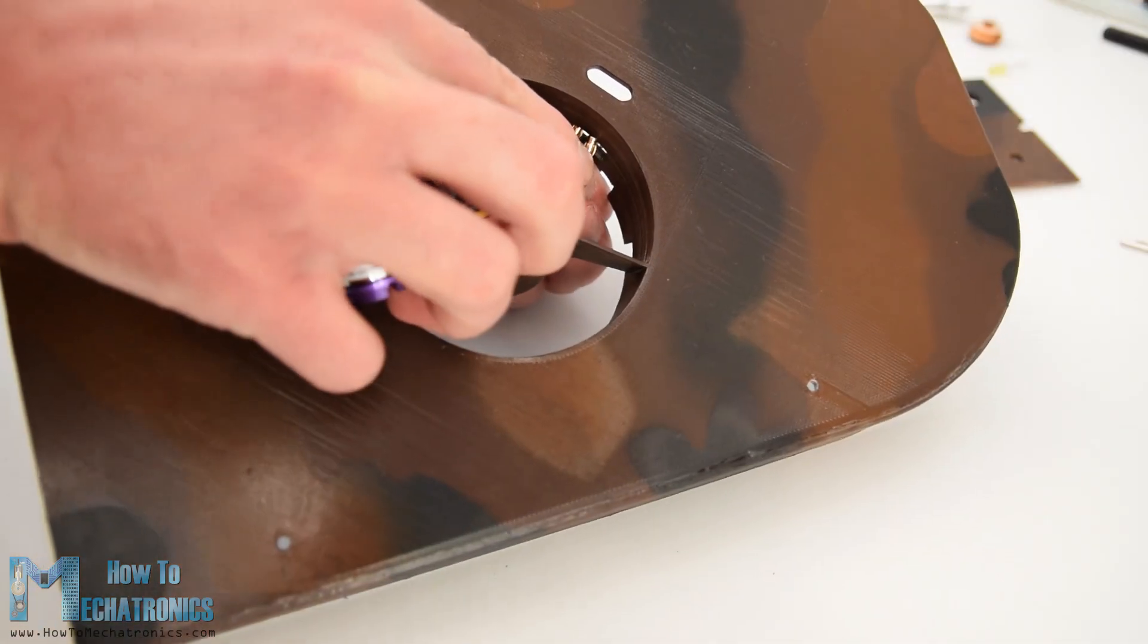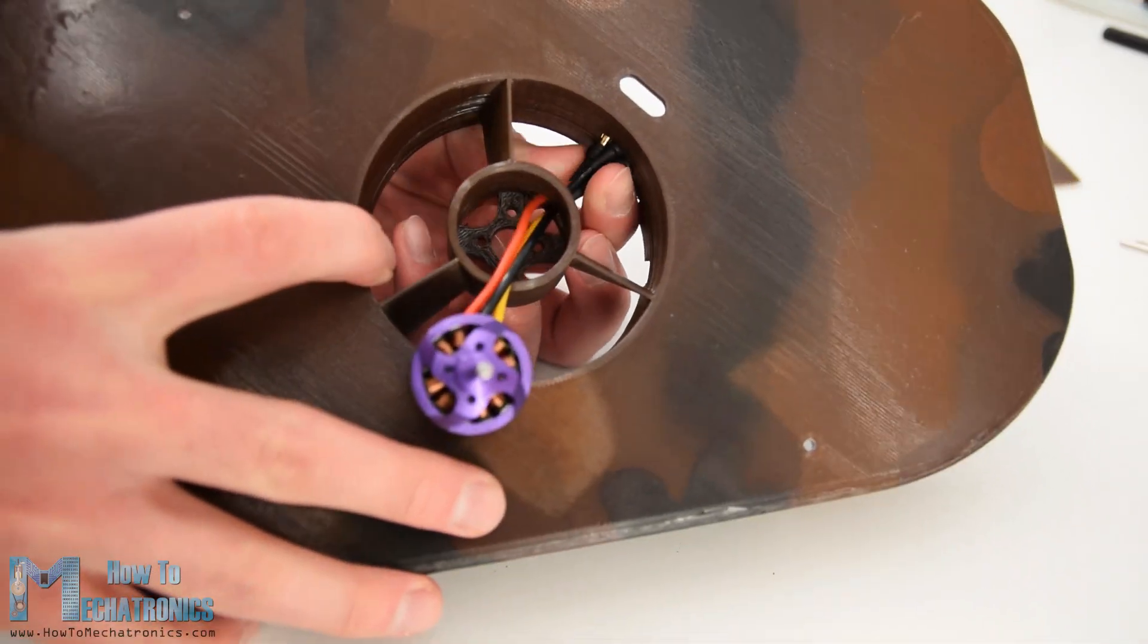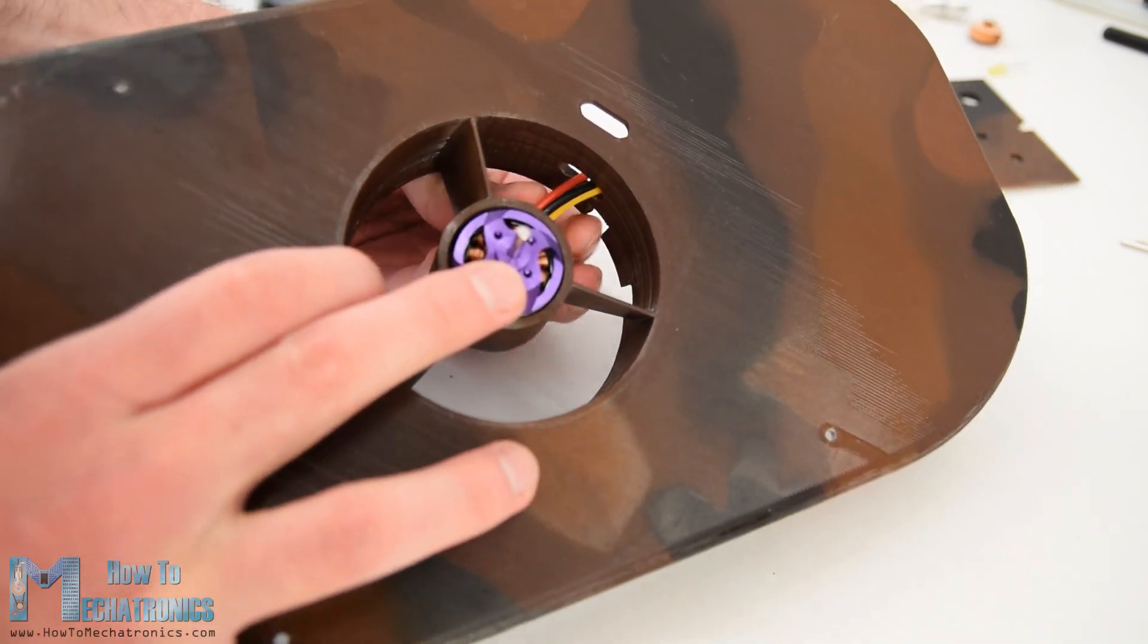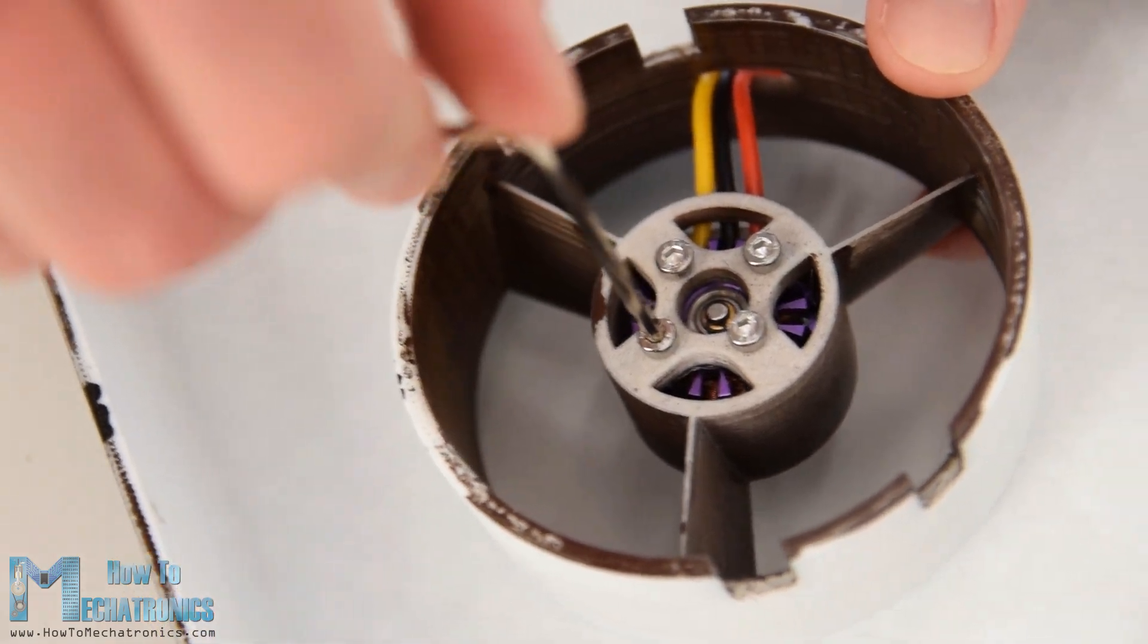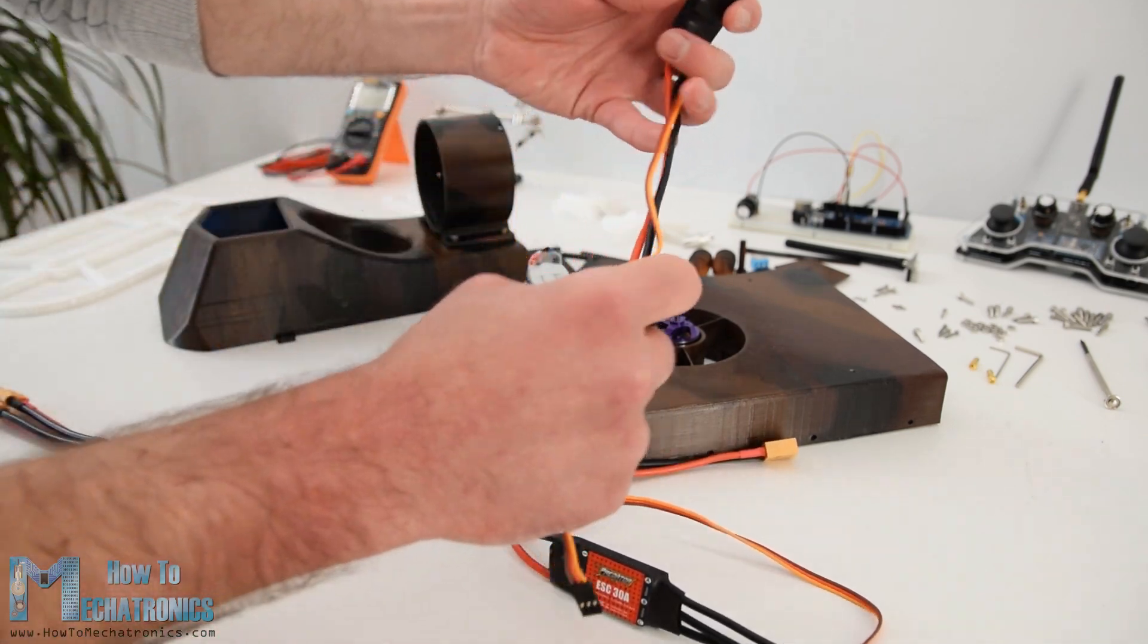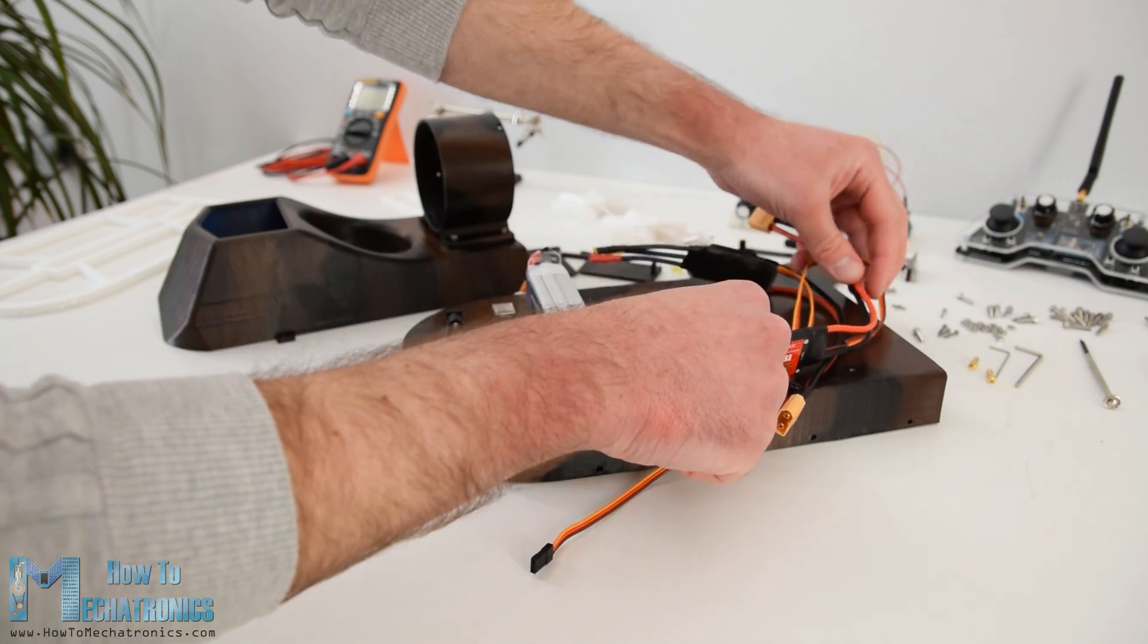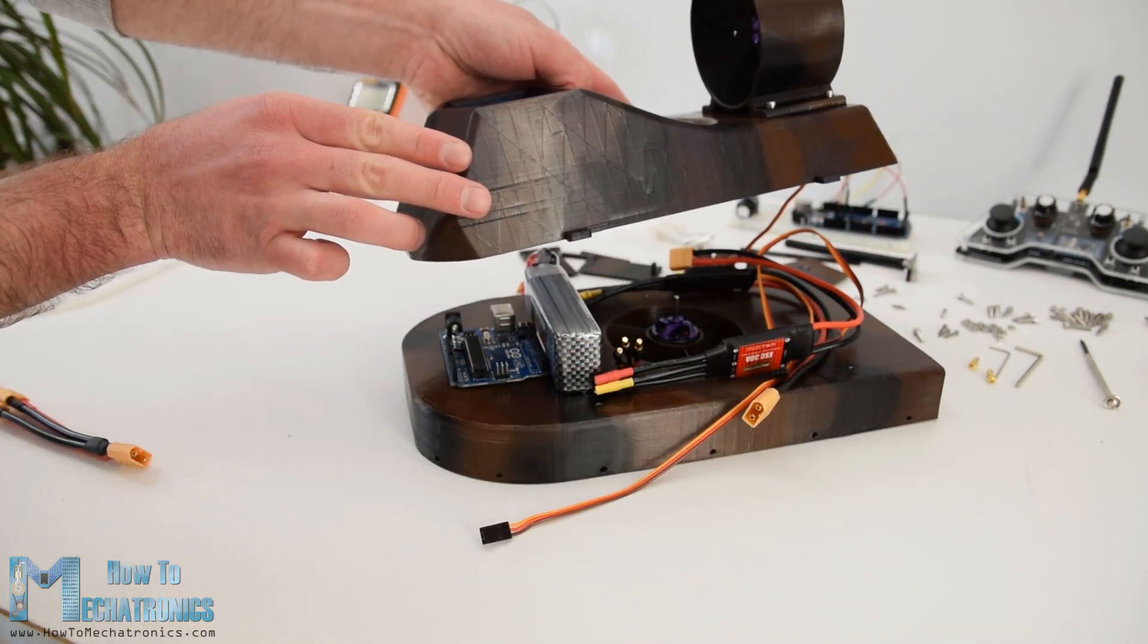Once I finished that, I continued with installing the second brushless motor to the hull of the hovercraft. Here again I used the same method. First, I passed the wires through the openings and then on the back side I secured the motor using the four M3 bolts. Ok, next comes the electronics. The electronic components will be placed in between the hull and the main body of the hovercraft. But before we do that, let's take a look at the circuit diagram and see how everything needs to be connected.